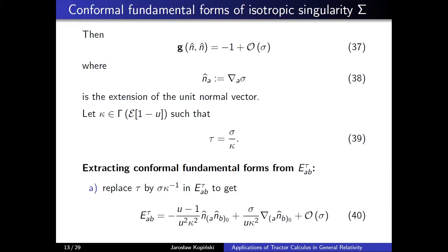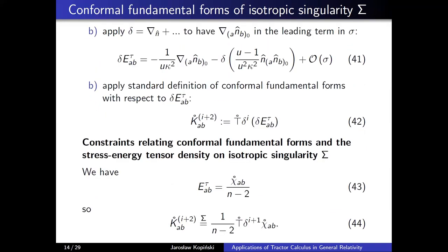The second term in equation 40 contains precisely the extension of the trace-free part of extrinsic curvature, but it is multiplied by σ so it is not the leading term. To remove the σ, I apply the operator Δ — a conformally covariant way of taking a derivative in the normal direction n̂ — to E_τ. The leading term is then proportional to the extension of the trace-free part of extrinsic curvature δ∇_{n̂}, which is the first term on the right-hand side of equation 41.